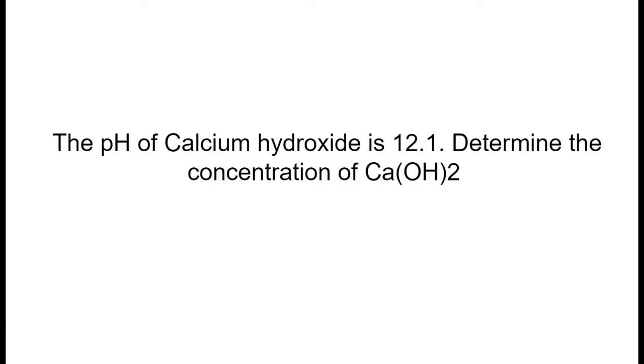Before we start, let's look at an example to solve. The pH of calcium hydroxide is 12.1. Determine the concentration of calcium hydroxide.